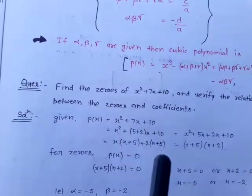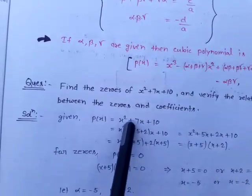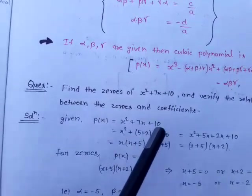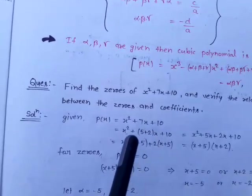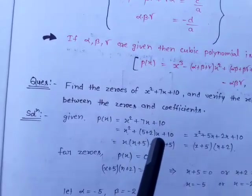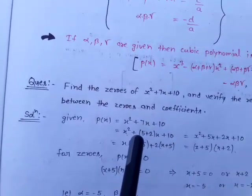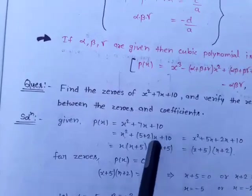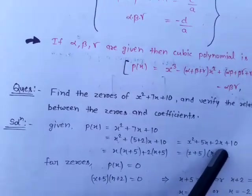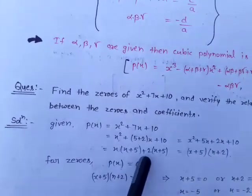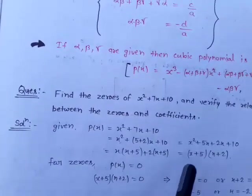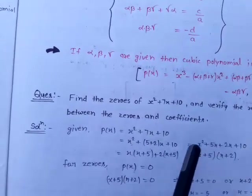We use the splitting of middle term method, as studied in class 9. We split the middle term 7 into two numbers such that their sum is 7 and product is 10. We break 7 into 5 and 2: 5 + 2 = 7 and 5 × 2 = 10. So: x² + 5x + 2x + 10. Taking common: x(x + 5) + 2(x + 5), giving factors (x + 5)(x + 2).